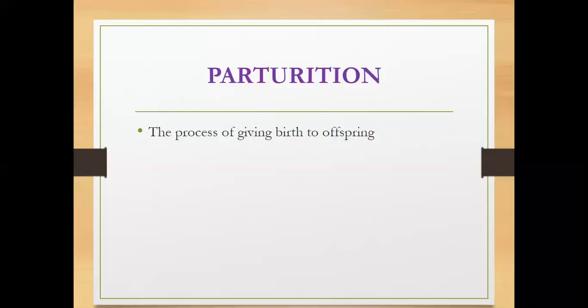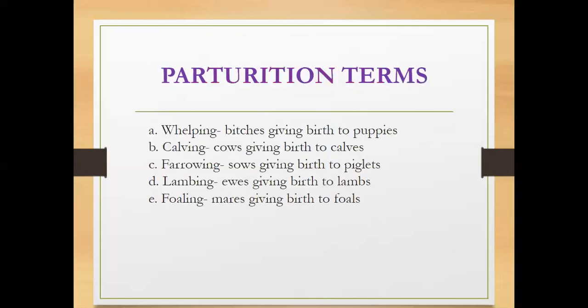We now move on to parturition, which is the process of giving birth. Here are the species-specific parturition terms: whelping — bitches giving birth to puppies; calving — cows giving birth to calves; farrowing — sows giving birth to piglets; lambing — ewes giving birth to lambs; and foaling — mares giving birth to foals. Assignment: what are the parturition terms for goats, cats, and rabbits?